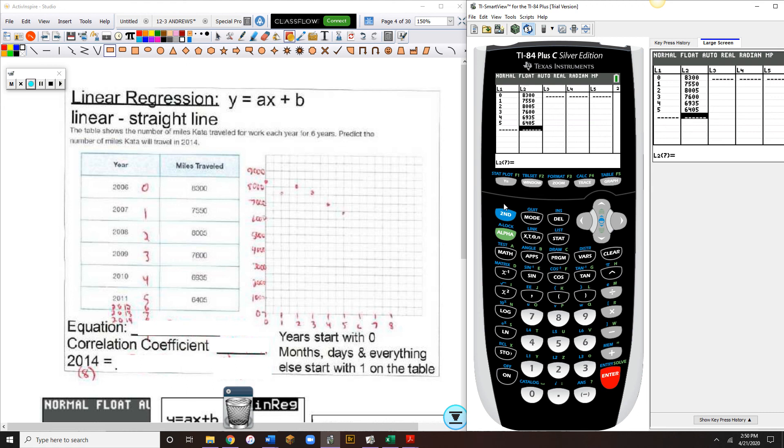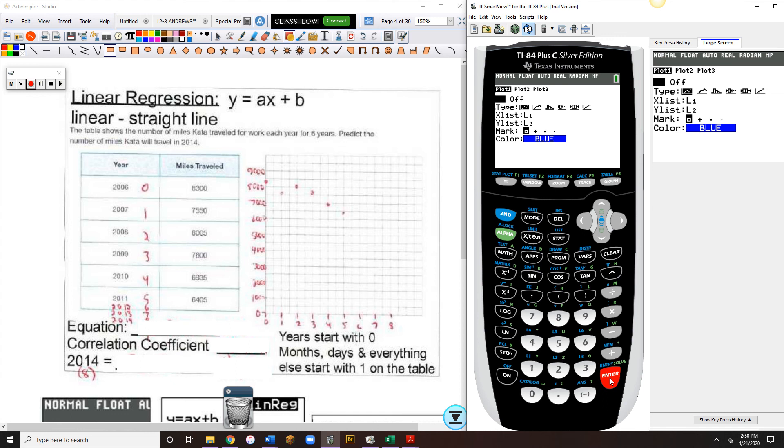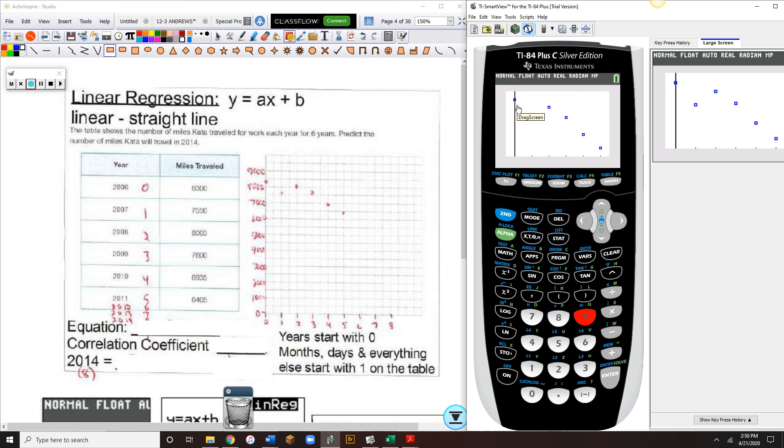One thing I want to do is turn on the stat plot. We're going to turn it to on. Then, if we hit zoom and the 9, zoom stat, it'll give us a picture of the plots, points that we plotted. And with the exception of this little hiccup right here, the data is mostly, it looks linear. And we're being asked to do a linear regression here.